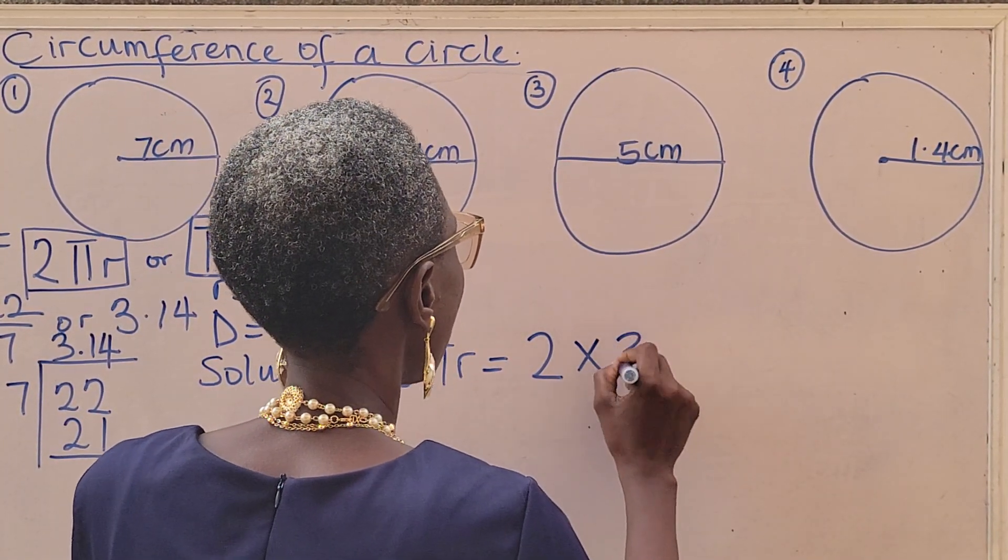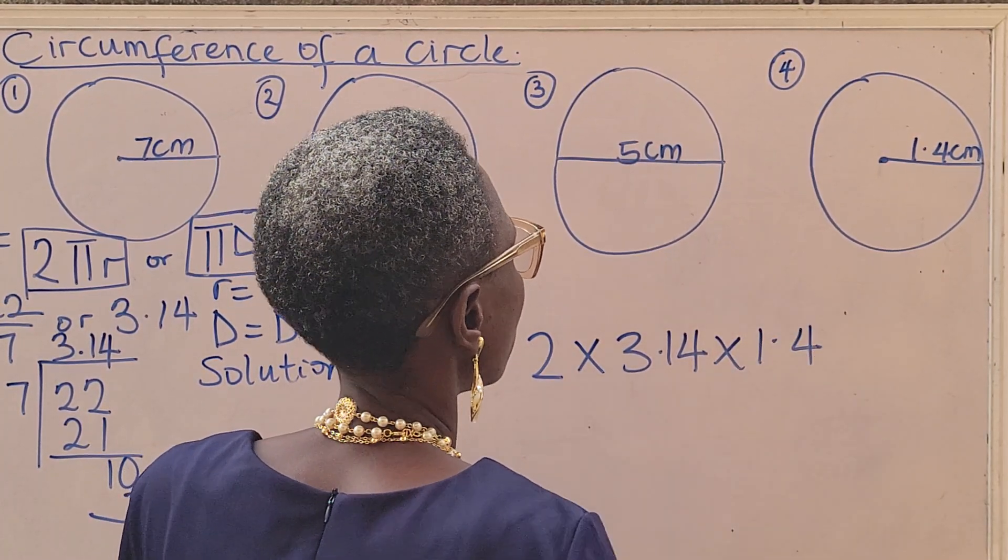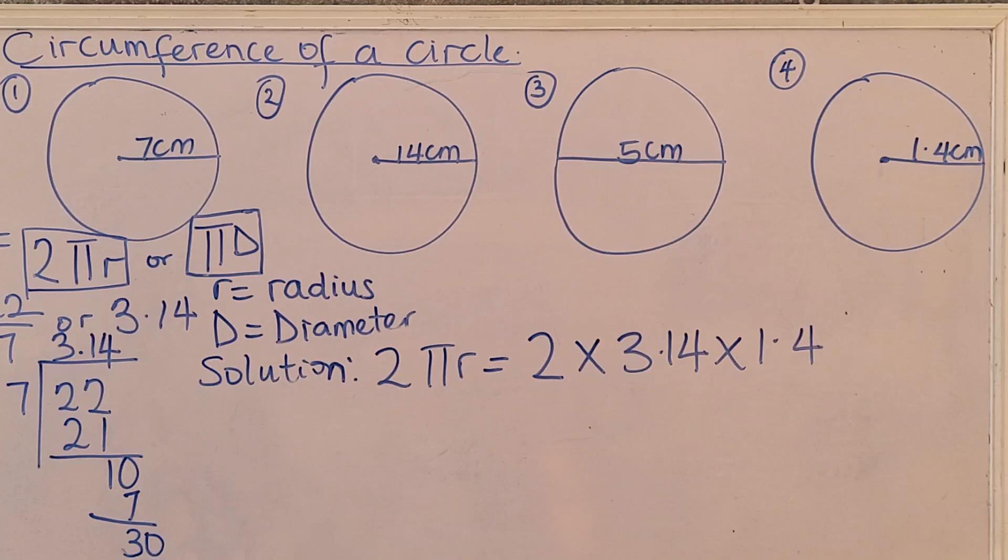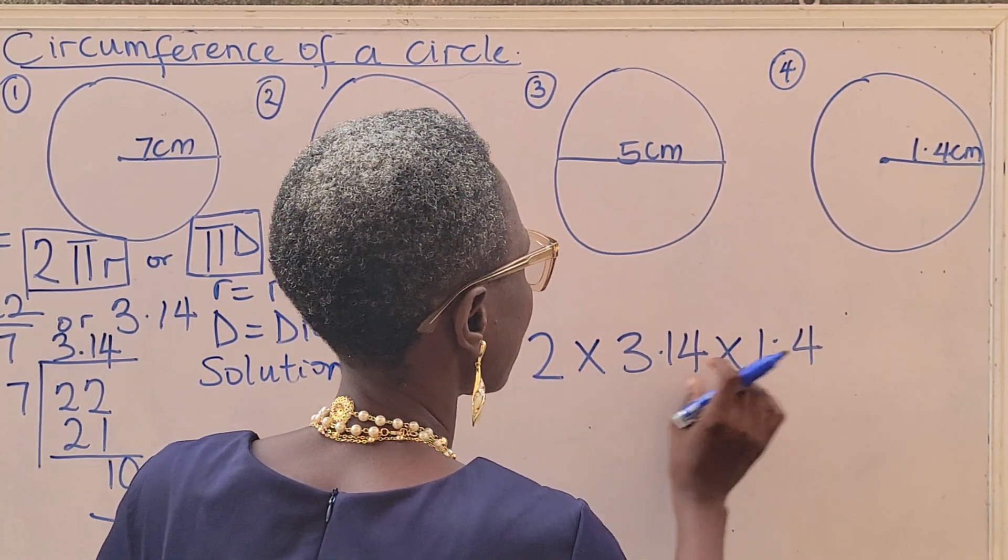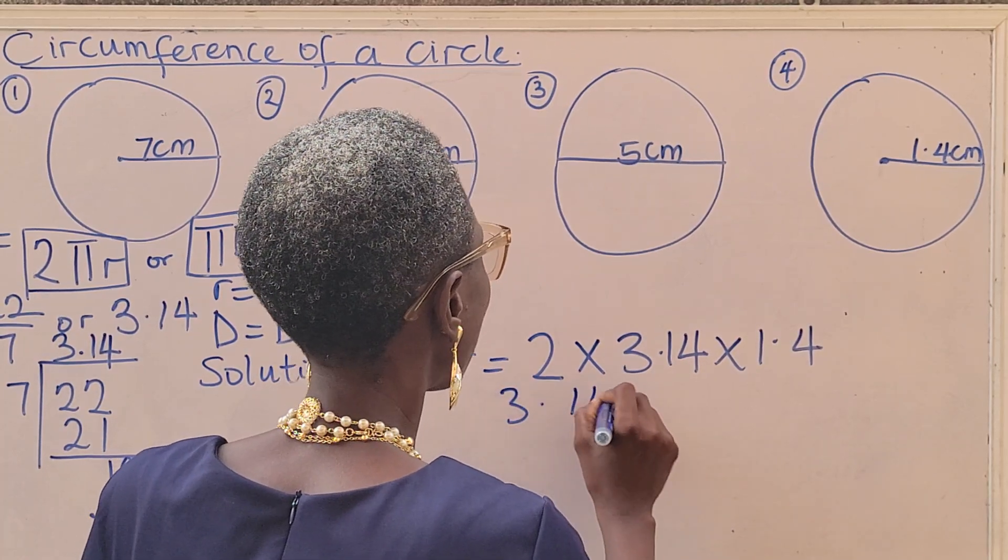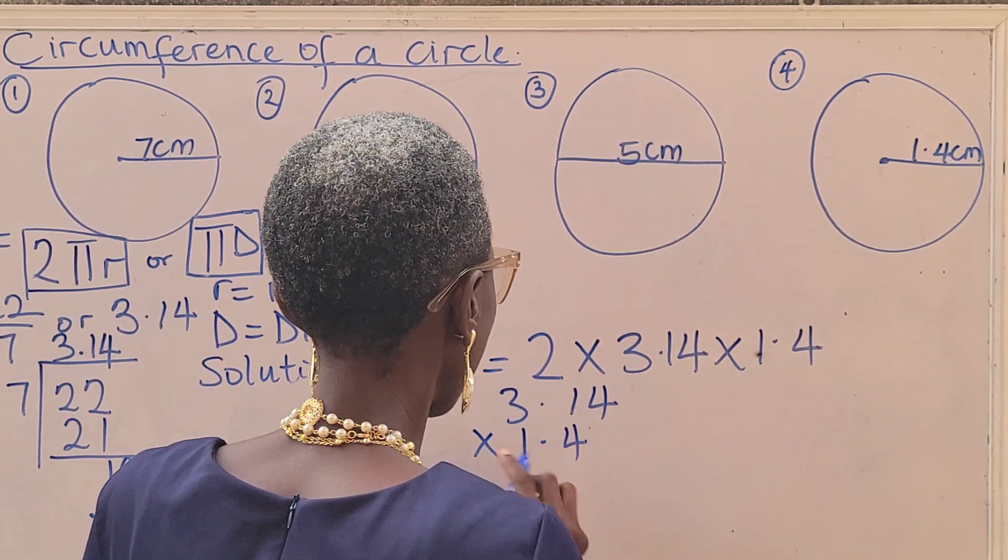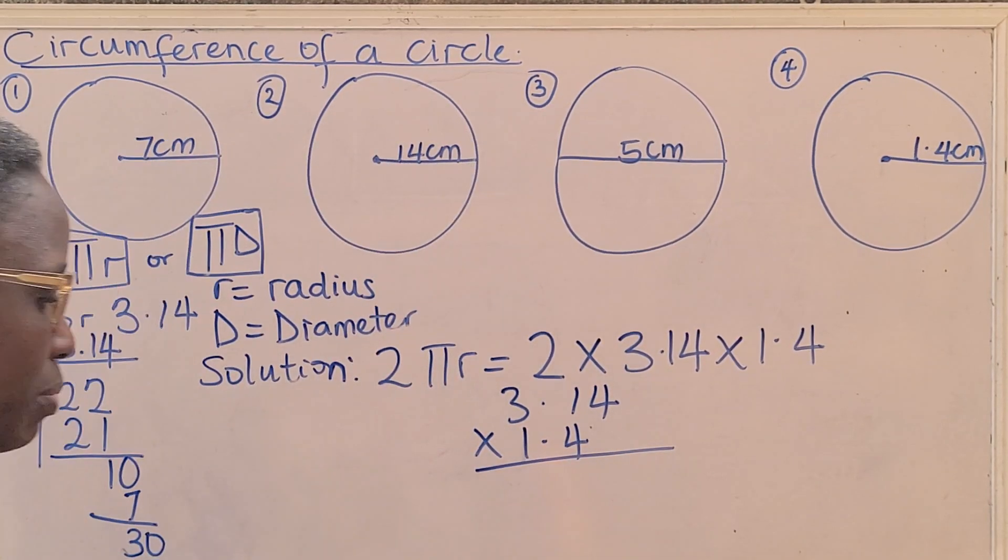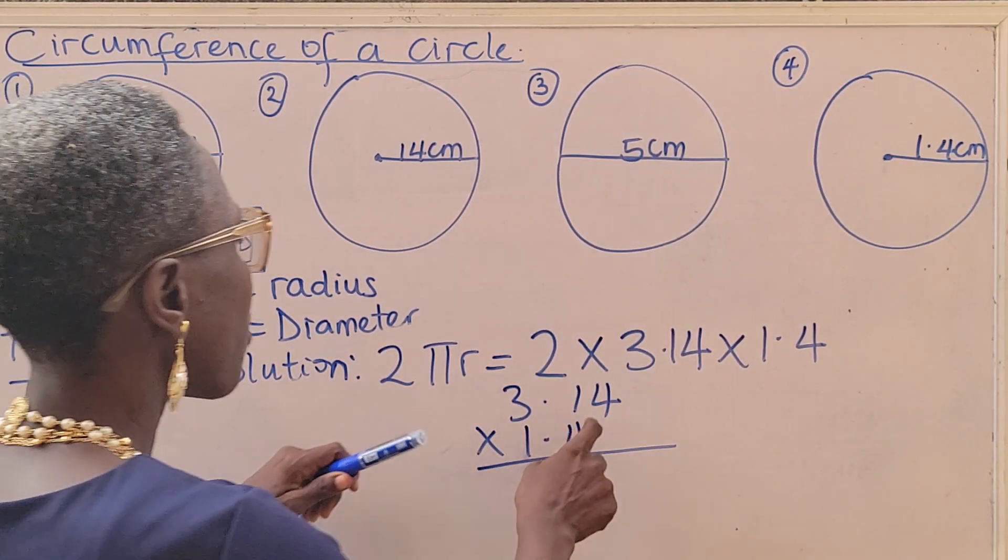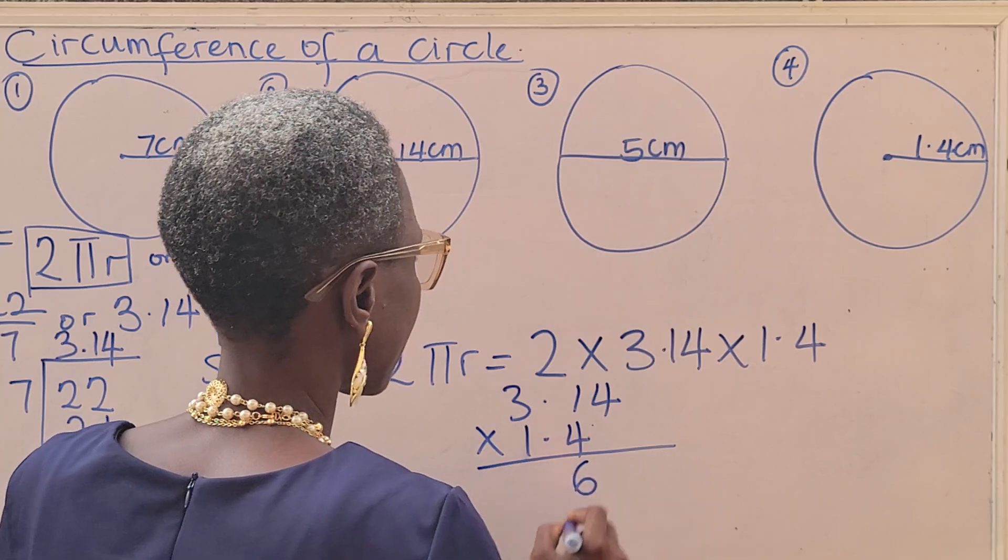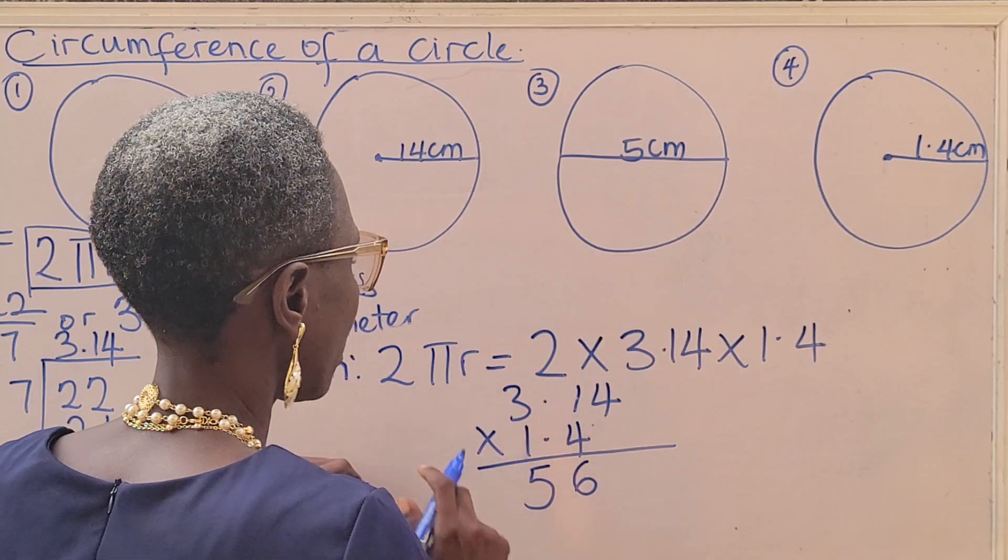So 2 times 3.14 times 1.4. I'm not using 22 over 7. So we can now multiply. I can decide to multiply this first: 3.14 times 1.4. You can watch my video on multiplication of decimal by decimal, but I will still explain. 4 times 4 is 16. 4 times 1 is 4 plus 1, that's 5. 4 times 3 is 12.